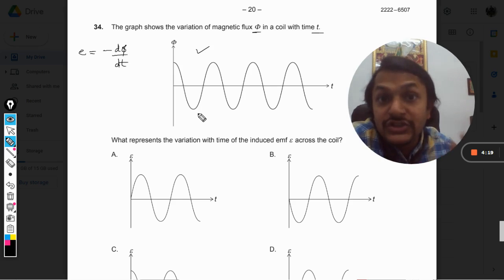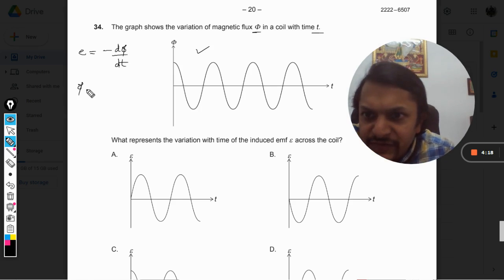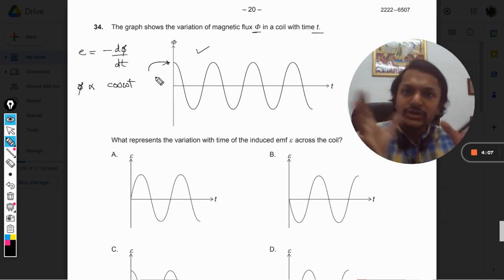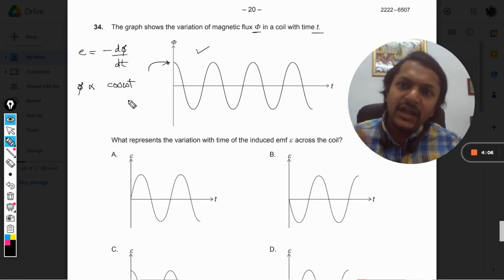As per the graph is concerned, you can see that this graph is similar to the variation of cosine. So this phi can be taken as directly proportional to cos omega t, then only we would be getting this kind of a graph.